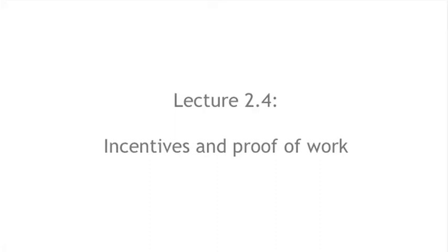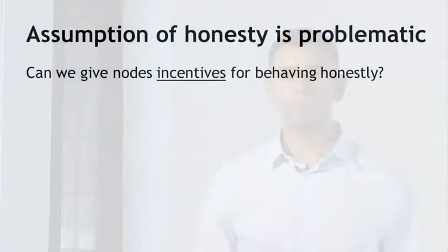In the previous section, we got a basic look at Bitcoin's consensus algorithm and a good intuition for why we believe that it's secure. But recall that at the beginning of the lecture, I told you that Bitcoin's decentralization is partly a technical mechanism and partly clever incentive engineering. So far, we've mostly looked at the technical mechanism. Now let's talk about the incentive engineering that happens in Bitcoin.